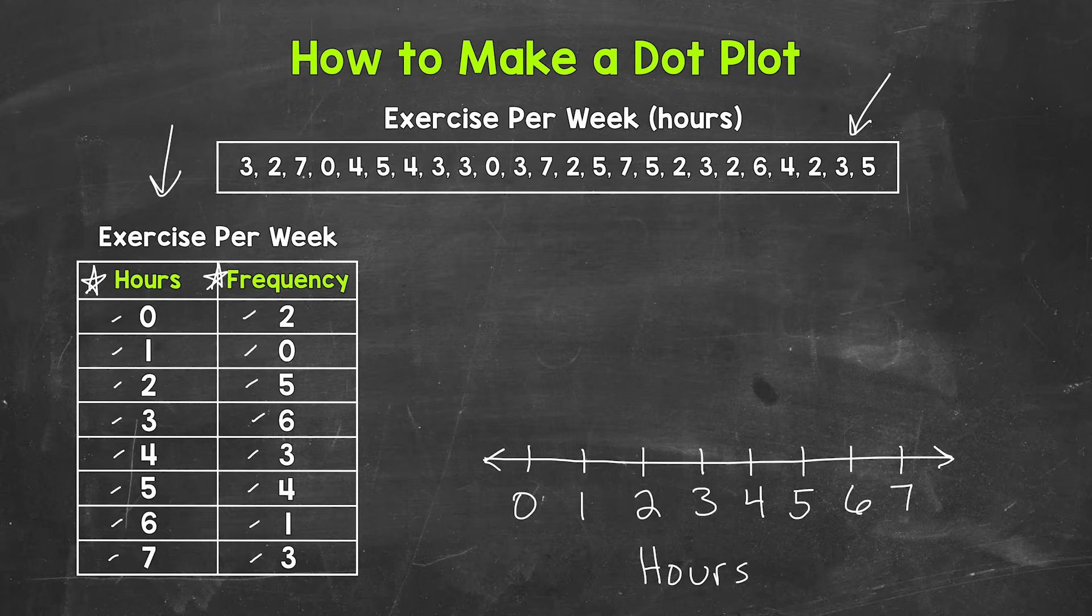Now that we have our number line, we need to draw dots to represent the data. Let's start with zero hours of exercise. We have two people for that, so we need two dots above zero to represent those two people. So one, two.